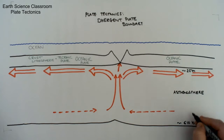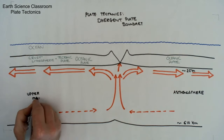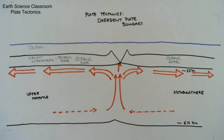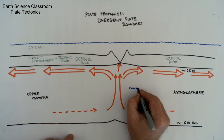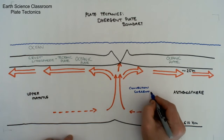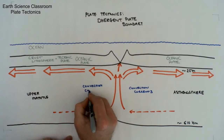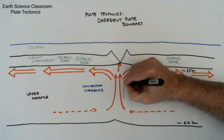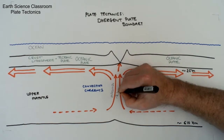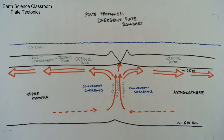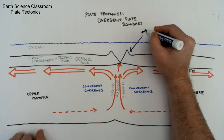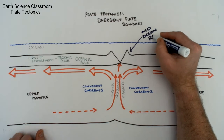The oceanic plate is thin compared to continental — between 5 to 15 or 20 kilometers thick — and is composed of basalt. Basalt is an igneous rock; it's extrusive and formed from cooling lava. This lava comes through the crust at weak points, called the ridge, where lava breaks through onto the ocean floor, condenses, and forms basaltic rock. These high-elevation mountains on either side are called the ridge.